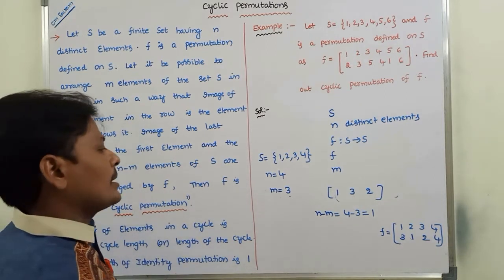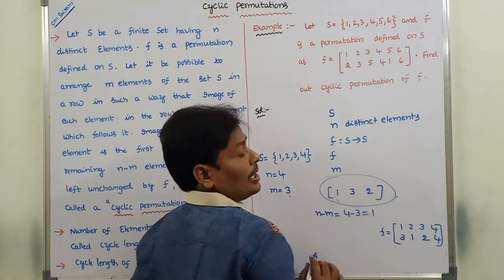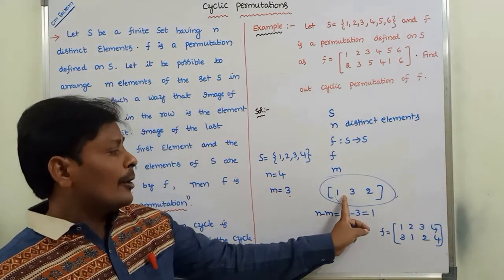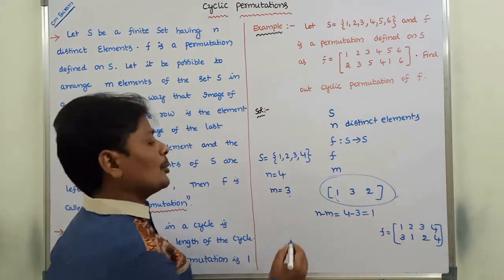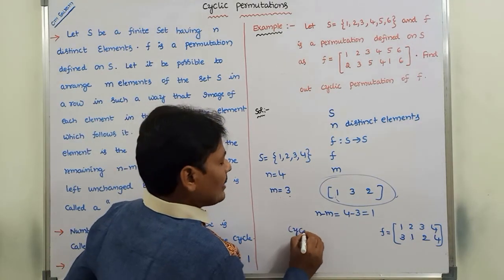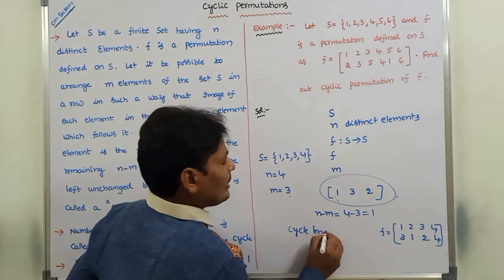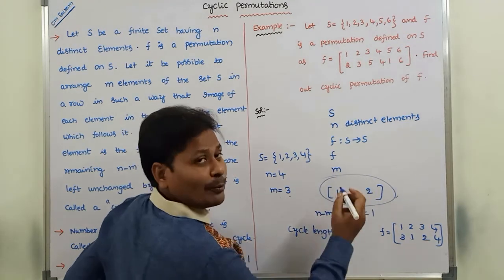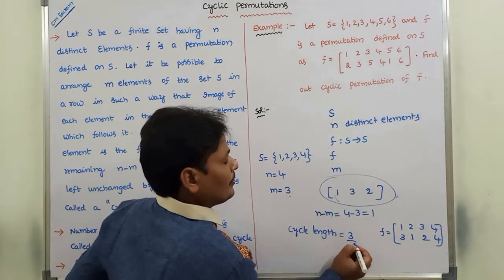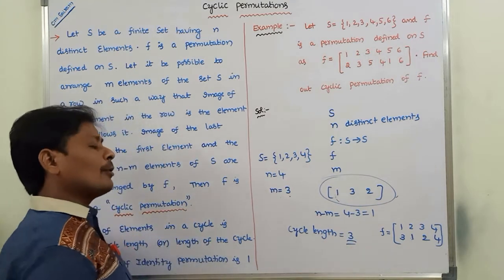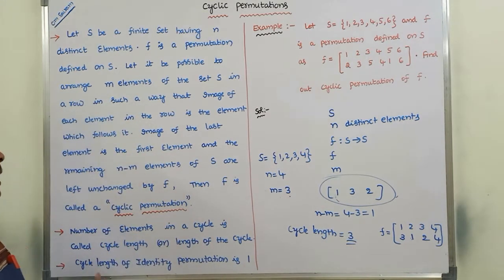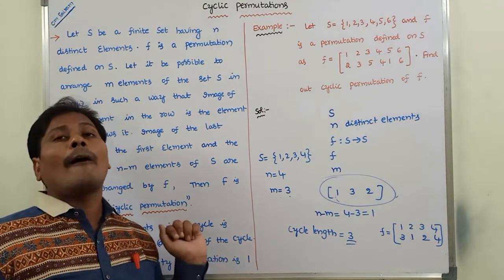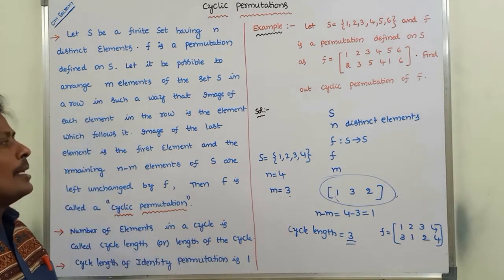So this is the cyclic permutation. How many elements are there in that cycle? Only 3 elements. The cycle length equals the number of elements in the cyclic permutation, which is 3. So cycle length equals 3. Also, the cycle length of the identity permutation is always 1.